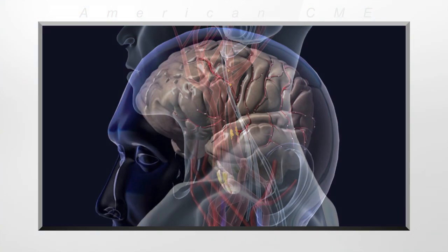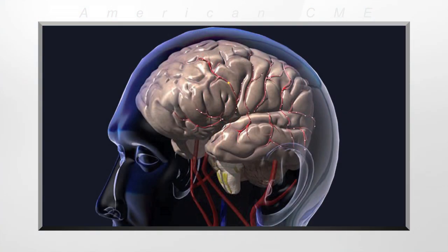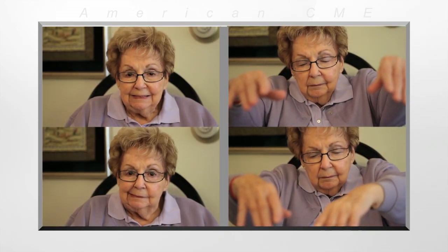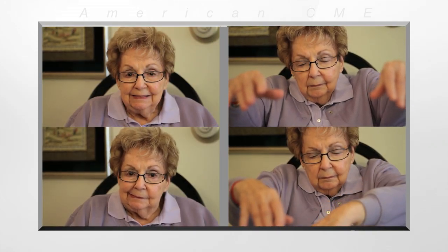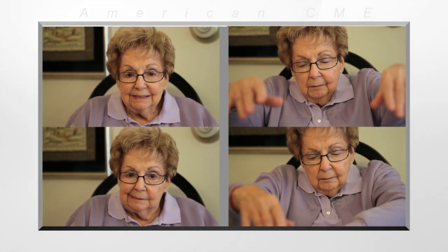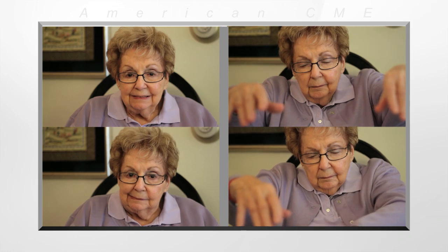We are all familiar with the classic signs and symptoms of a stroke. One-sided weakness, facial droop, and arm drift are just a few of the signs and symptoms that patients may display when suffering a stroke in the right or left hemispheres of the brain. But when a stroke occurs in the brainstem or cerebellum, patients may not display these classic signs and symptoms that we've come to rely on.